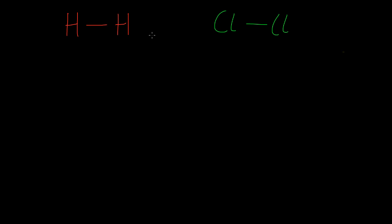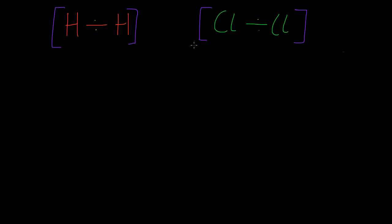A covalent bond is a shared pair of electrons. But are the electrons shared equally between the two atoms? In these two orbitals that are in contact with each other, are the electrons spending their time equally divided between this atom and this atom? The answer is yes, they are pretty much equal in molecules where an element is bonded to the same element, like in hydrogen or in chlorine. These are the same element, so the electrons are shared equally, which I can show by drawing the electrons in the middle.